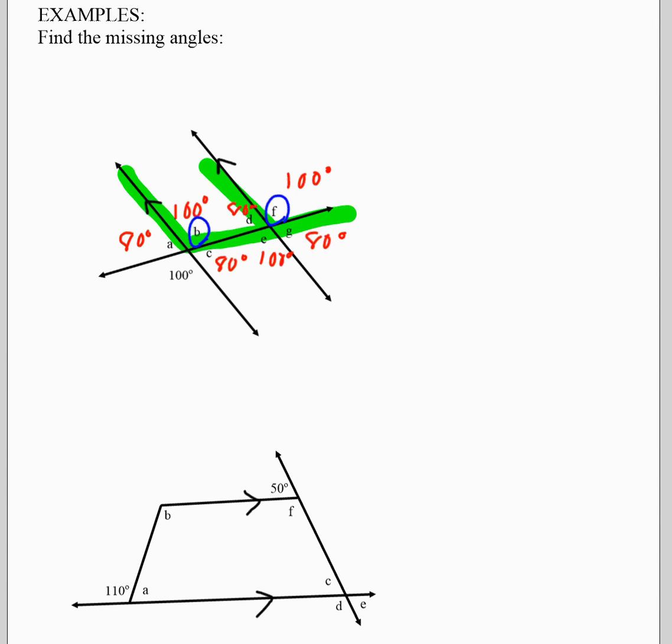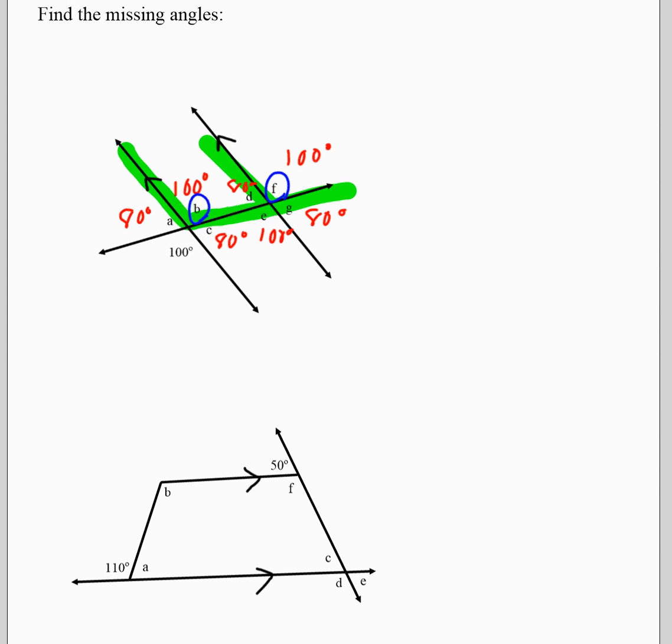Let's look at one with a polygon or in this case a quadrilateral. How would we find missing angles? How would we apply our knowledge of these things in geometry to find missing angles? So again, we start with things that we might already know. For example, 110 and A are corresponding, so we know, sorry, are supplementary. So we know that A is 70 degrees. Likewise, we know that F and 50 are also supplementary. So F is 130. Remember, supplementary angles add up to 180 degrees.